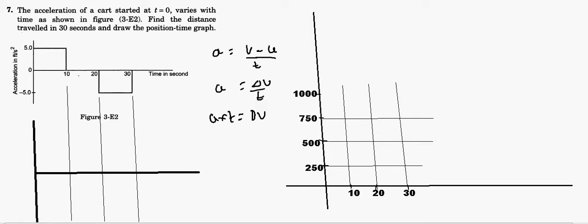In this question, we'll first draw the velocity-time graph from the acceleration graph, and then from the velocity-time graph we'll draw the distance or position-time graph. So I'm going to draw the velocity-time graph first, and then the displacement or distance-time graph.